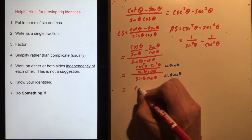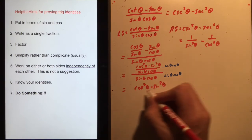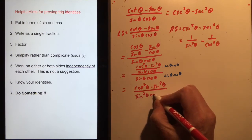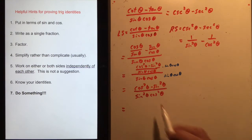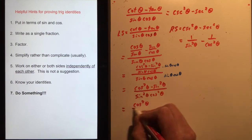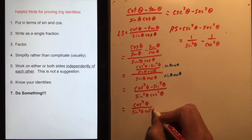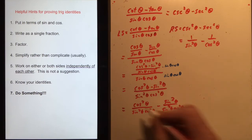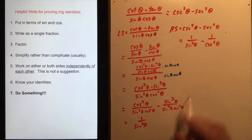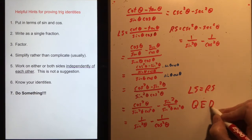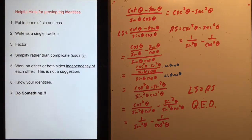Multiplying by sinθcosθ on top and bottom clears the denominators in the numerator, leaving (cos²θ - sin²θ) in the numerator and sin²θcos²θ in the denominator. Splitting into two fractions: cos²θ/(sin²θcos²θ) minus sin²θ/(sin²θcos²θ). The cos² terms cancel in the first fraction, leaving 1/sin²θ, and the sin² terms cancel in the second, leaving 1/cos²θ. Left side equals right side — QED.